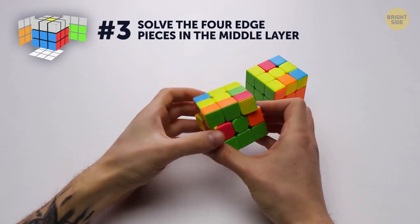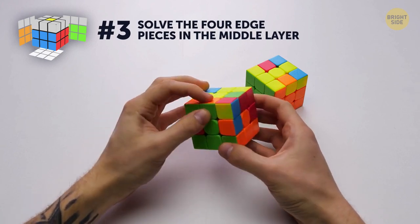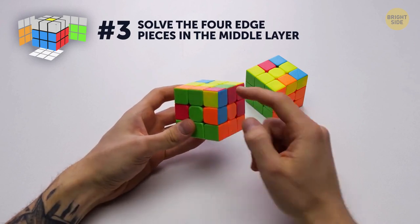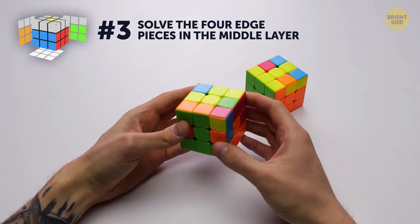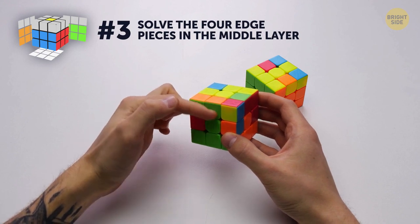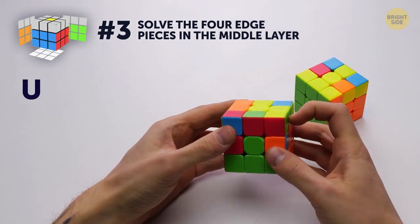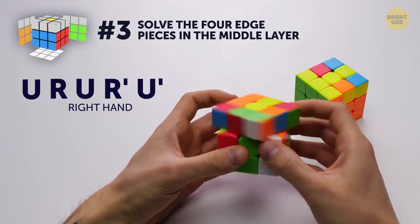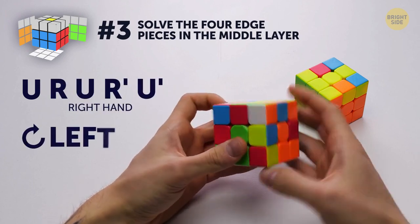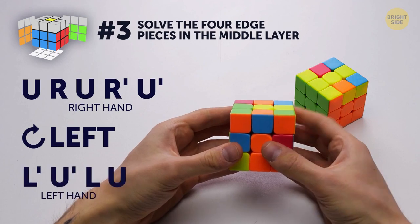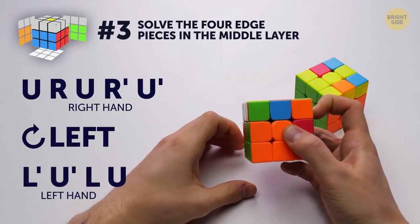In the first case, the layer you'll be working on is to the left on the top of the target position. You must match it with the right color. Here's how you can do it. Turn the upper part to the left. Use the algorithm for the right hand. Rotate the cube left. Use the algorithm for the left hand.